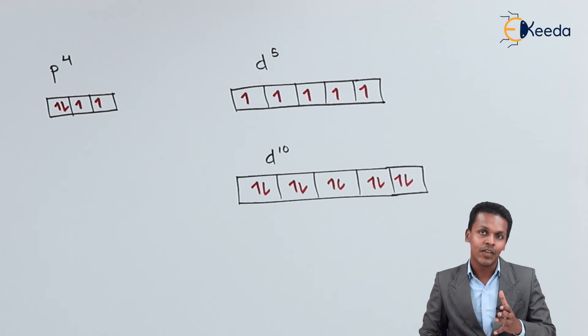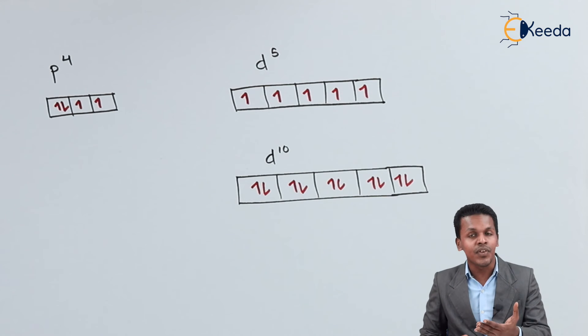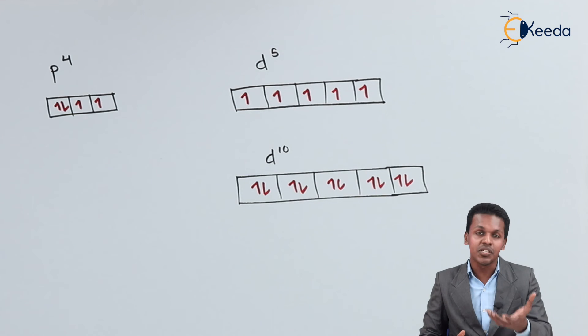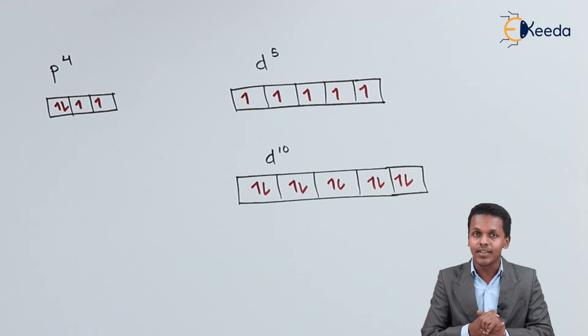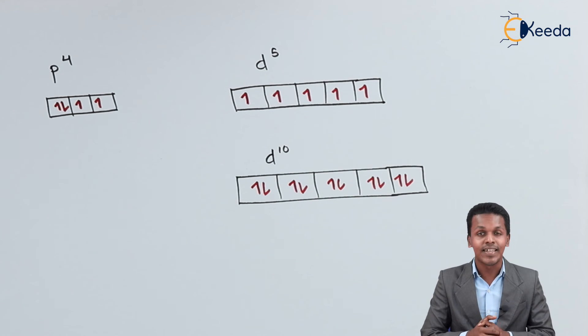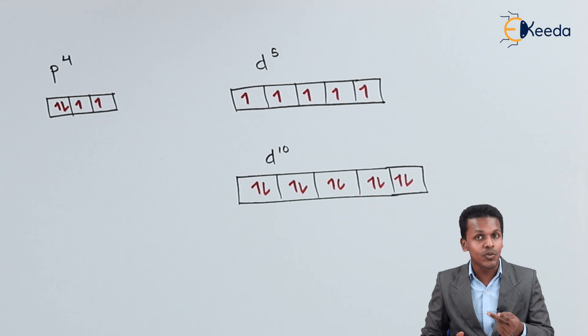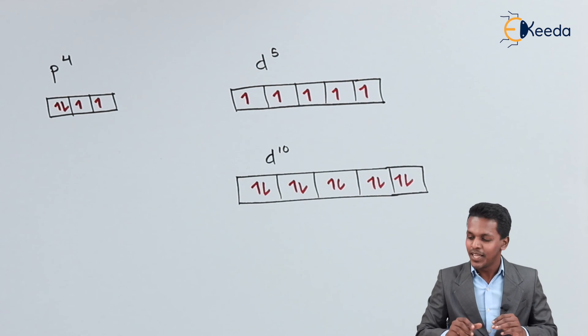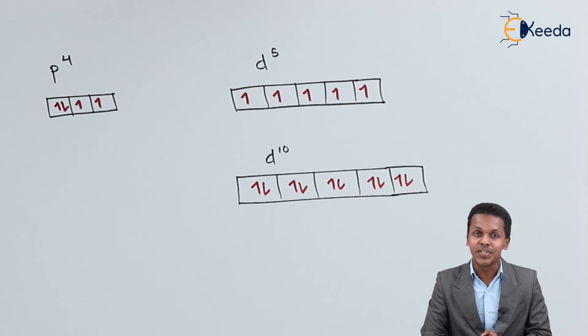So these are certain rules that we have to follow. And based on this we can easily evaluate the electronic configuration as well as predict the oxidation number, the valency, and all kinds of factors based on the electronic configuration. And for that we have to follow certain rules: the FBOS principle, Hund's rule, and also the Pauli exclusion principle. So based on all that, these are the rules to fill the electrons in the orbitals.